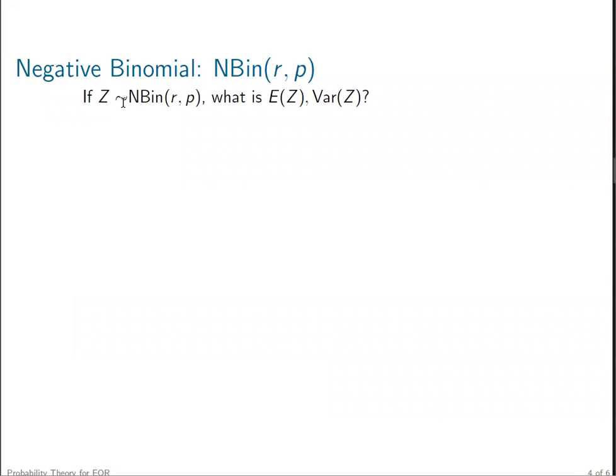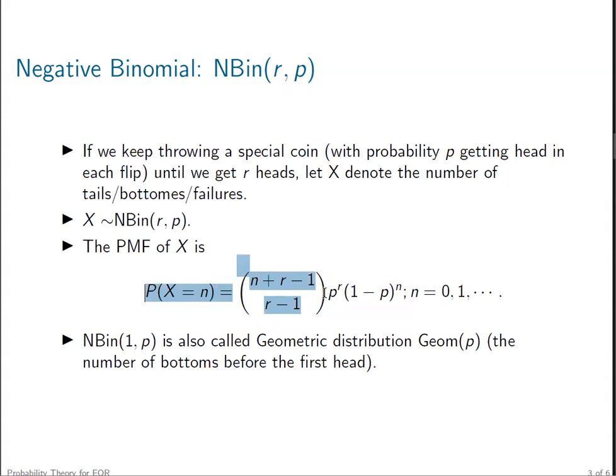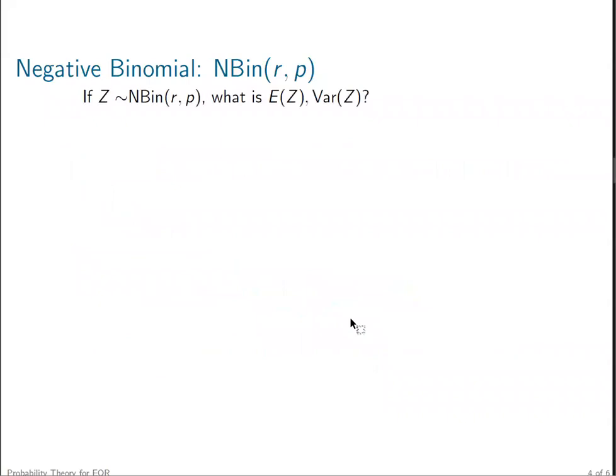Now the question is: suppose we have a random variable Z which follows a negative binomial distribution with parameter r and p. What is the expected value of Z, and what is its variance? You can pause the video and try to figure it out yourself. If you try to calculate everything by definition, given we already know the PMF function, that's doable, but it's a lot of calculations. Do we have an easier way to calculate the expectation and variance? Fortunately, for this case, we do. We're going to apply a technique by decomposing Z as a summation of IID random variables, and then all calculations will be much easier.